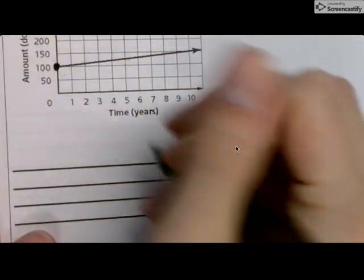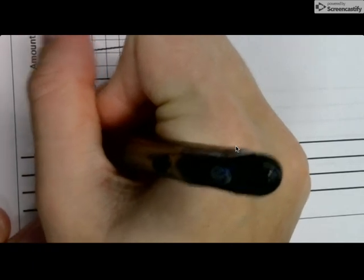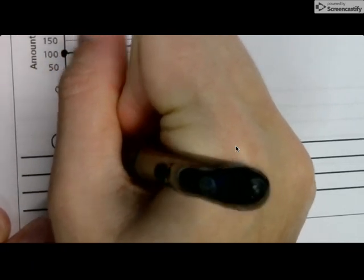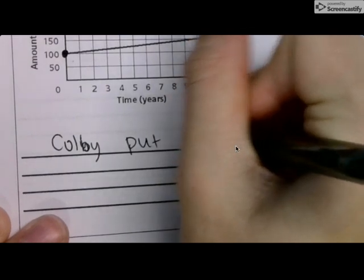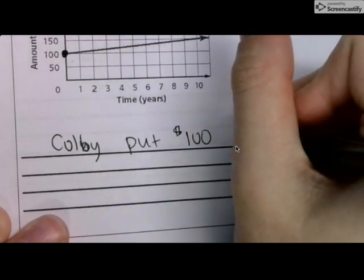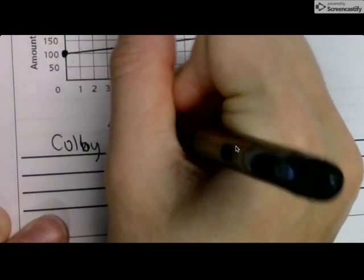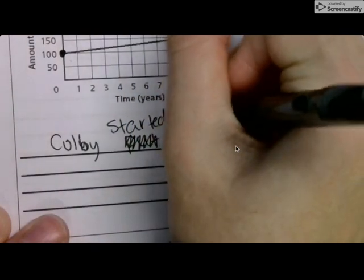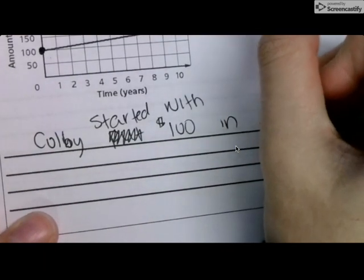So, in this case, what would it represent? In this case, it would represent the starting value. So, Colby put $100, or started with, let's say that, started with $100 in the account.